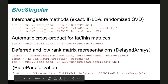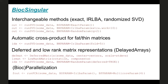The next package I've been working on is BiocSingular. This does much the same thing, except that instead of nearest neighbor searches, it does the singular value decomposition. We have a single S4 generic, runSVD, and just by switching out the BSParam object, you can change the algorithm used to do your singular value decomposition.